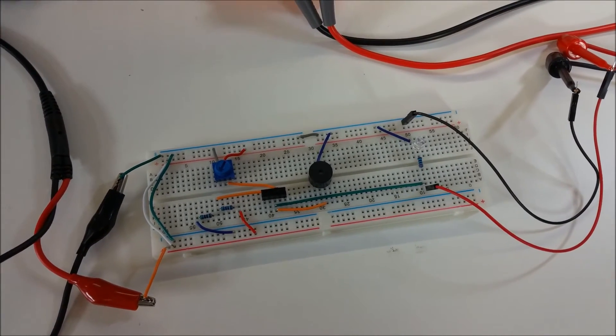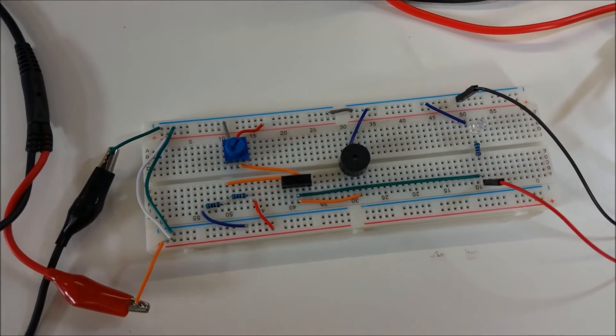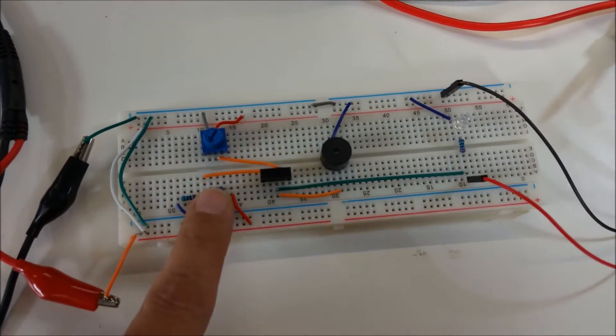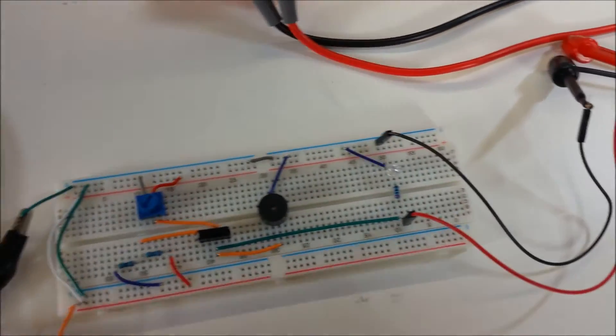So here's a close-up of the breadboard showing the potentiometer and the resistor voltage divider. I have a switch here to be able to go back and forth between them, a buzzer and an LED to show the output.